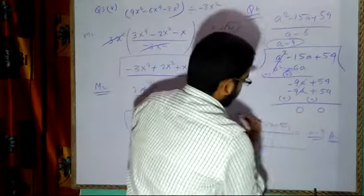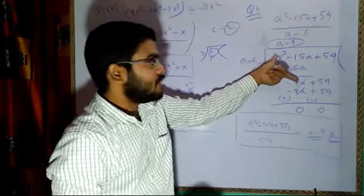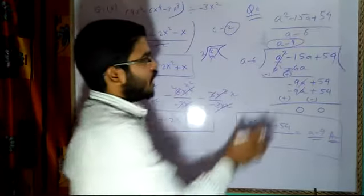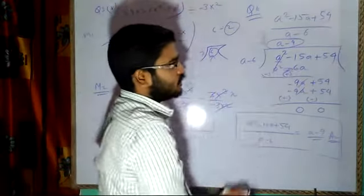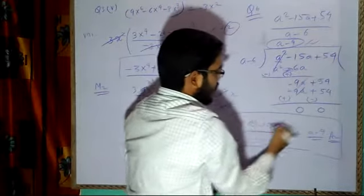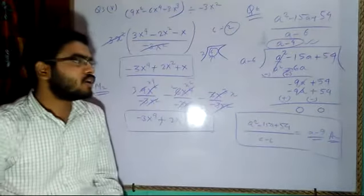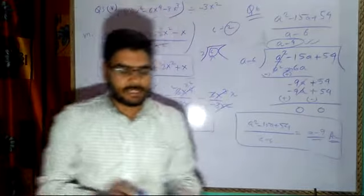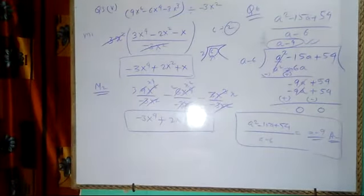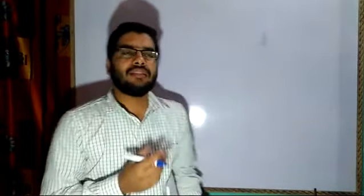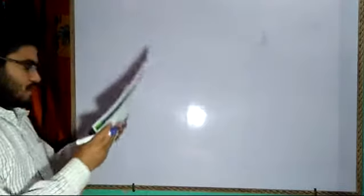Finally, you can write: a² minus 15a plus 54 divided by a minus 6 is equal to a minus 9. Show this division in your fair copy — do not use the rough part of the page. You should also write one more step for verification: the divisor multiplied with the quotient should equal the dividend. That is how you verify.